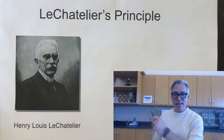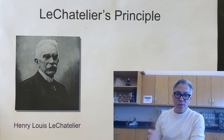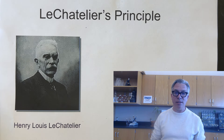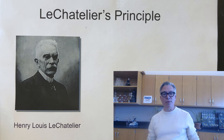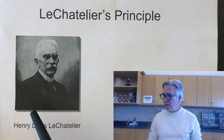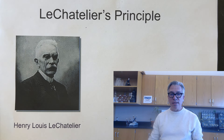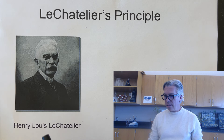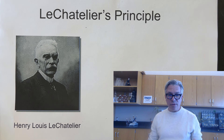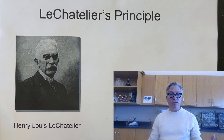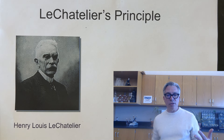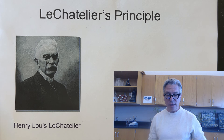So what is going on in those test tubes, and why are they changing colors? It turns out we're seeing evidence of Le Chatelier's principle, which if you're studying chemical equilibrium, you're going to run into it early and often. It's named after Henry Louis Le Chatelier, a French scientist in the late 1800s and early 1900s, who did a lot of work with metals, alloys, and equilibrium.